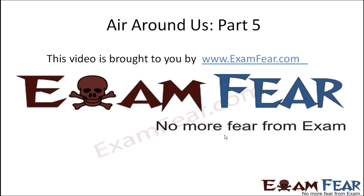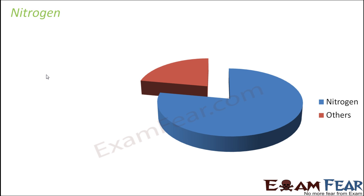This video on air around us part 5 is brought to you by examfear.com. Let us talk about each of these gases one by one, starting with nitrogen. Nitrogen forms the major part of air — more than 78%. If you have a circular piece or a biscuit, most of the biscuit is like nitrogen; you just leave out one quarter of it and all other gases will be happy with that.